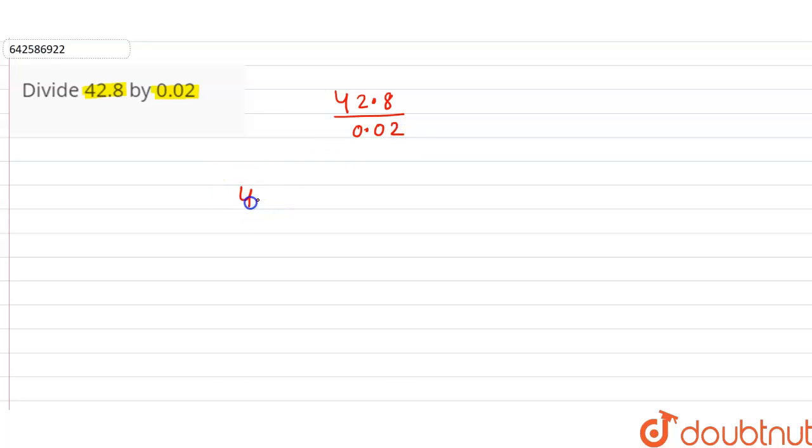Let's remove the decimal. It will be equal to 428 divided by 10, divided by 0.02. 0.02 can be written as 2 divided by 100.